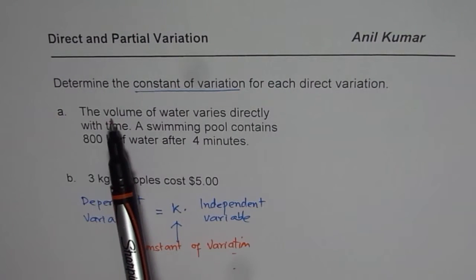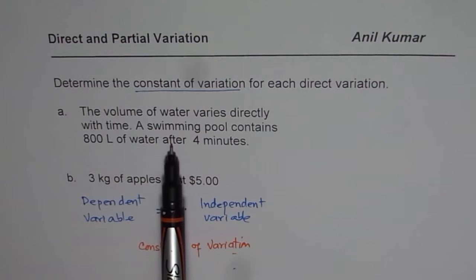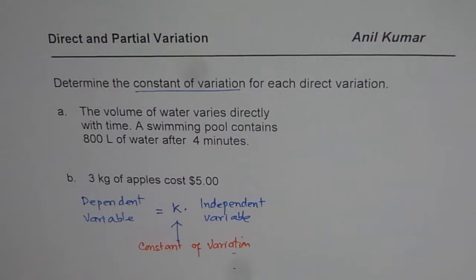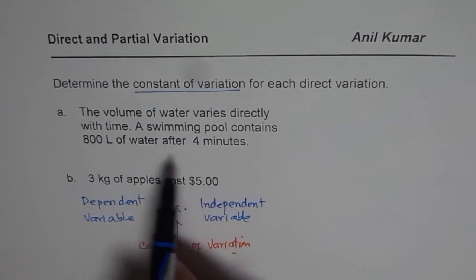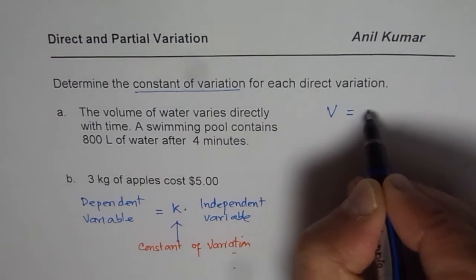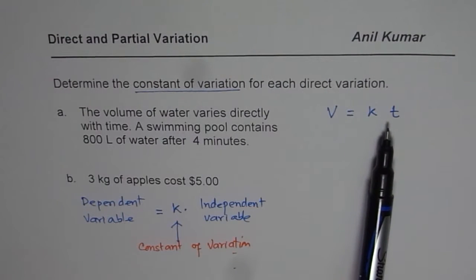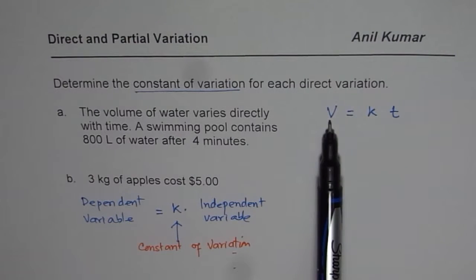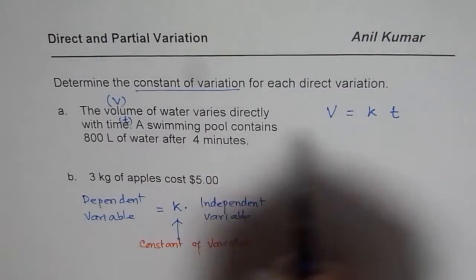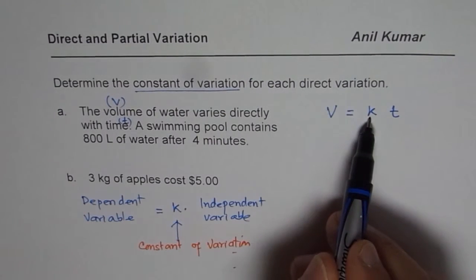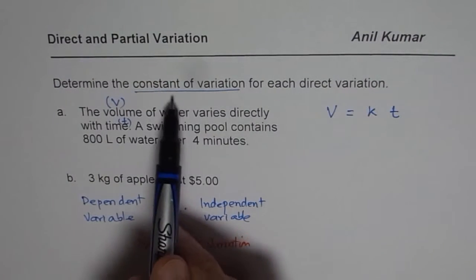Now let's look into the questions again. The first part is: the volume of water varies directly with time. The swimming pool contains 800 liters of water after 4 minutes. In this situation, the dependent variable is the volume of water and the independent variable is time, so we can write volume V equals k times time t. That is how the relation is — since it is a direct variation, we use k, the constant of variation.